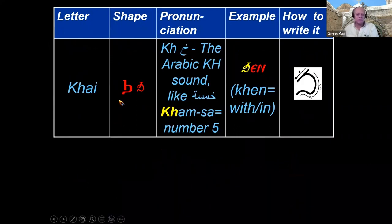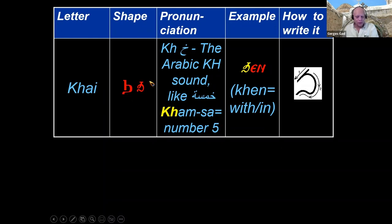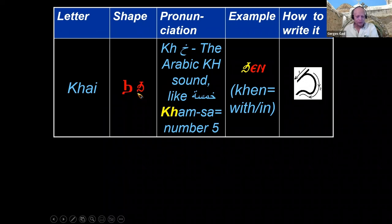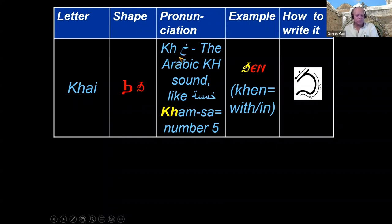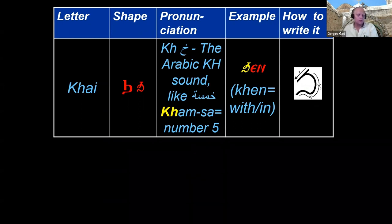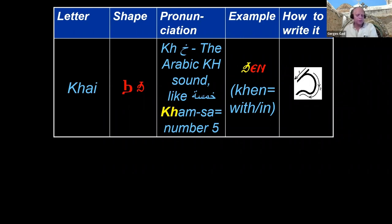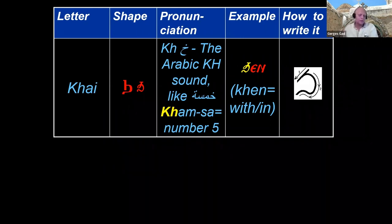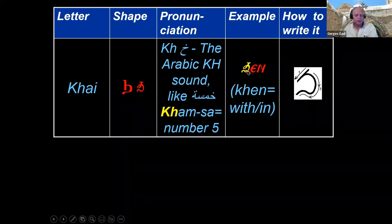So this next letter is called Chai. It doesn't really look like anything familiar in English. Chai is pronounced the Kh sound, the Arabic Kh sound. By the way, the Kh is not only in Arabic, but there are many languages that have that sound. So Hebrew has it, German has it, Dutch has it. Like if you say Molokhiya, or you say Khamsa like five, right?